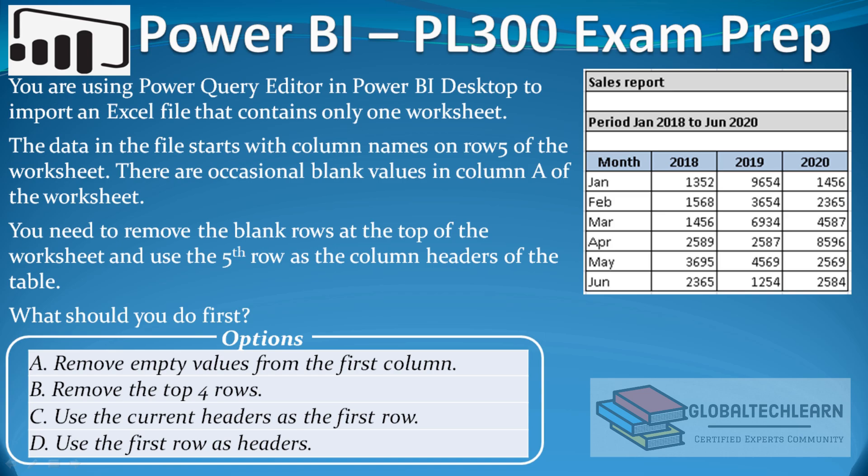Under the options we have four choices: Option A is remove empty values from the first column, Option B is remove the top 4 rows, Option C is use the current headers as the first row, and Option D is use the first row as headers. This question has been asked in the Power BI exam in various ways and multiple times.